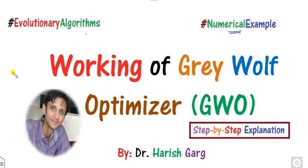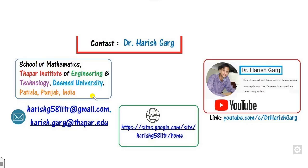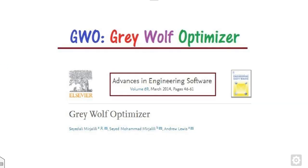Myself, Dr. Gur, working in the School of Mathematics, Tapper Institute, India. You can contact me via my email IDs, or you can simply follow this link for more updated videos. First of all, what is the Gray-Wolf Optimizer, abbreviated as GWO, which was initially proposed by Professor Miljani in the year 2014, and the result is published in Advances in Engineering Software, volume 69.